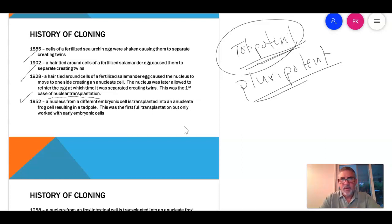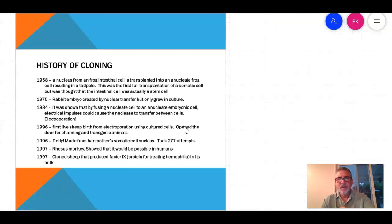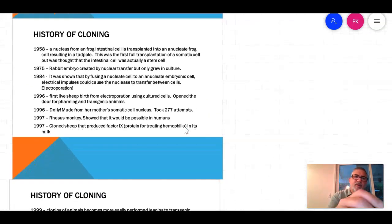1952, we get our first tadpole nuclear transplantation. 1958, so this is an important one, because then I'm using an intestinal cell. So I'm using a somatic or a body cell to take a nucleus out, and I put it into an enucleate egg or an anucleate egg, an egg without a nucleus. And we can show that we can create a tadpole that way.